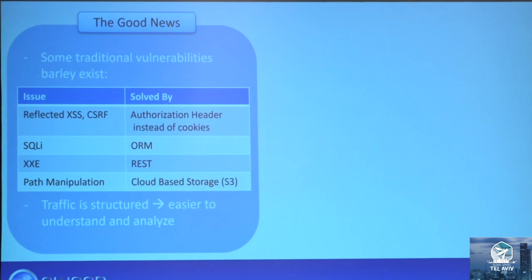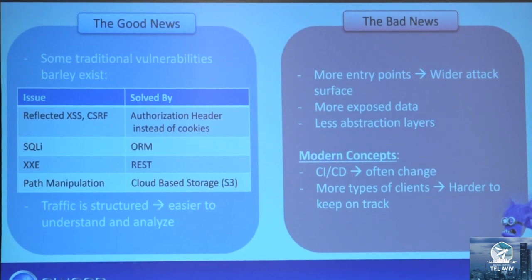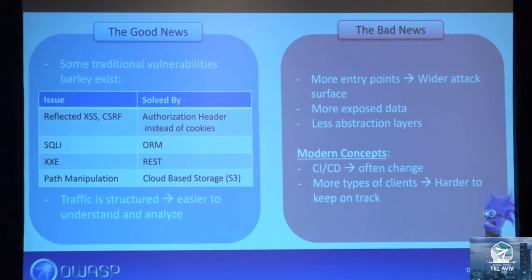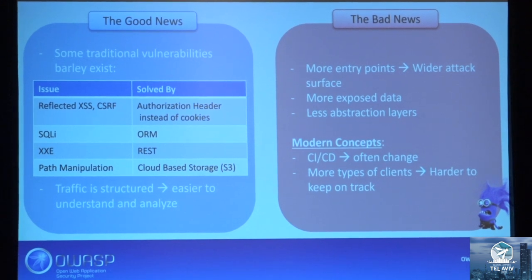The second good point is that the traffic is very structured, so it's easier to understand and analyze. Now the bad news: there are more entry points and the attack surface is much broader. There is more exposed data and fewer abstraction layers. APIs expose the underlying implementation of the application. Also, modern concepts like CI/CD and having so many types of clients make it really hard to keep track of APIs.